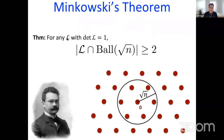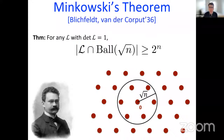The theorem says that for any lattice in dimension n with determinant 1, the number of lattice points in a ball of radius sqrt(n) is at least 2 — the origin is always there, but in addition there's at least one extra point. This is Minkowski's theorem in its most basic form. In fact, you can use the same proof and prove a slightly stronger lower bound. This was done by Blichfeldt and van der Corput in 1936: you actually get exponentially many points — you can get 2^n points in a ball of radius sqrt(n).